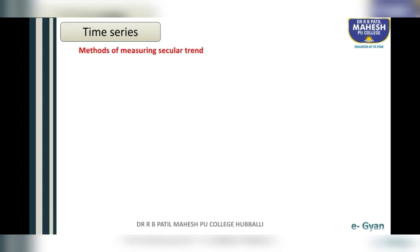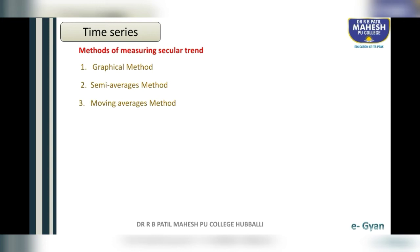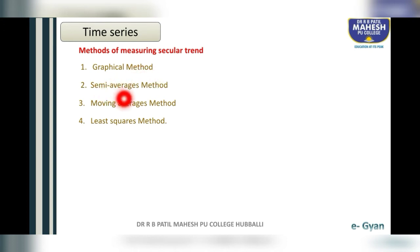Now, methods of measuring secular trend. To measure the secular trend, we have four methods. The first one is the graphical method. The second one is the semi-averages method. The third one is the moving averages method. The fourth one is the least squares method. We will study each one in detail.